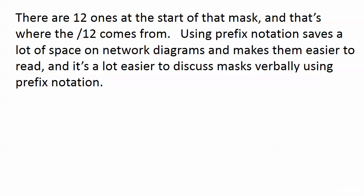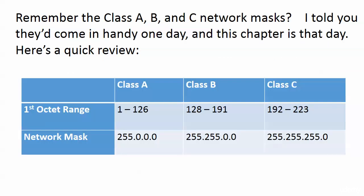Hey, remember these? These are your Class A, B, and C network masks and your ranges. I told you they'd come in handy one day. It's not just something to memorize. Well this chapter is that day, and here's a quick review of them. Class A, first octet is 1 through 126 and the network mask is 255.0.0.0 or in prefix notation slash 8.